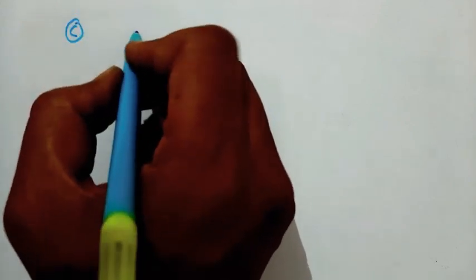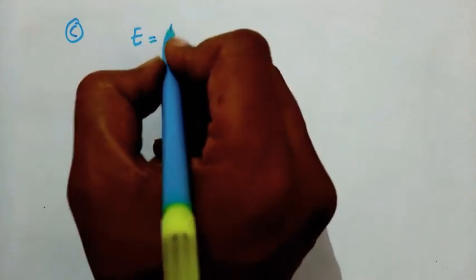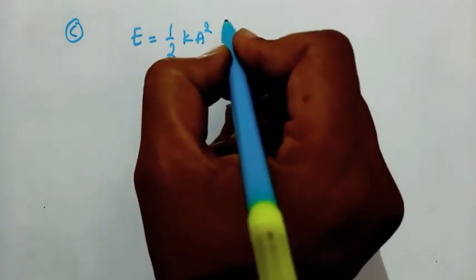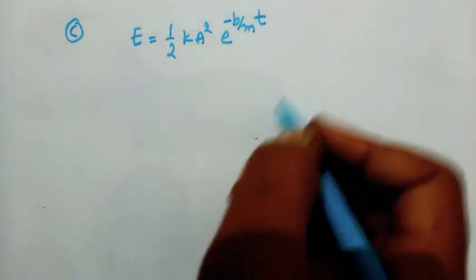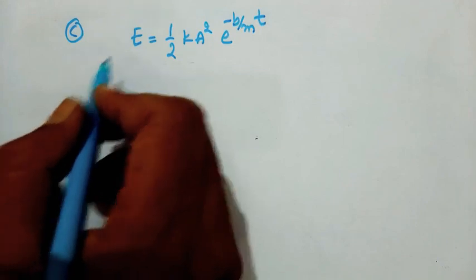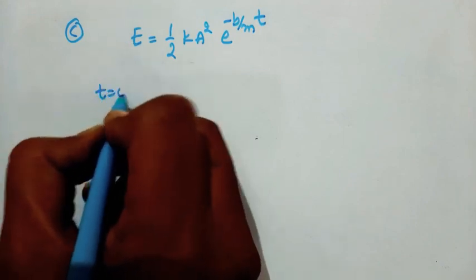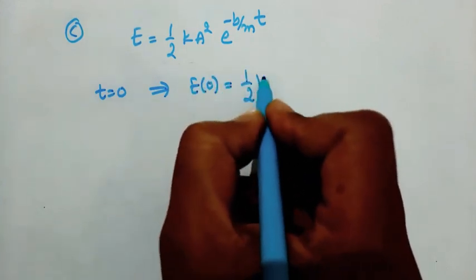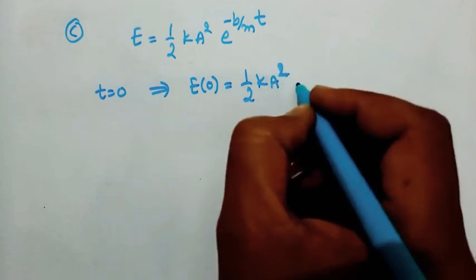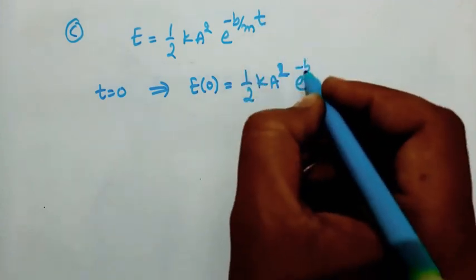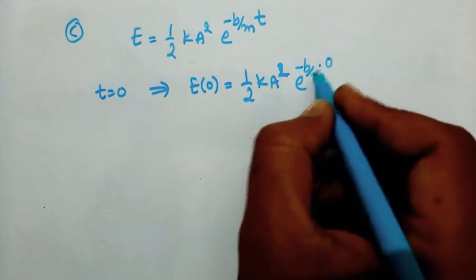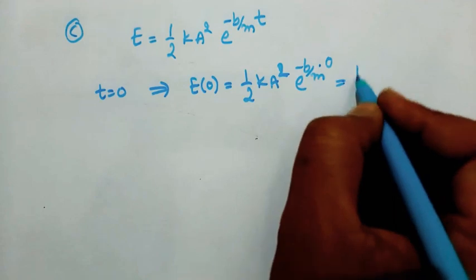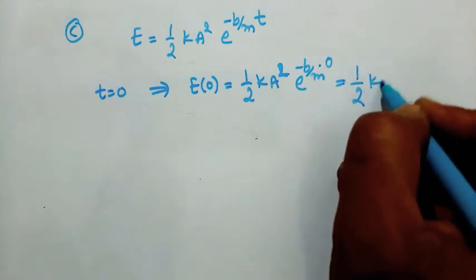For part three, the energy of a damped harmonic oscillator is E equals 1 by 2 KA squared times e to the power of minus B by M into T. Initially at time T equals 0, the energy E(0) equals 1 by 2 KA squared times e to the power of minus B by M into 0, which gives e to the power of 0 equals 1, so E(0) equals 1 by 2 KA squared.